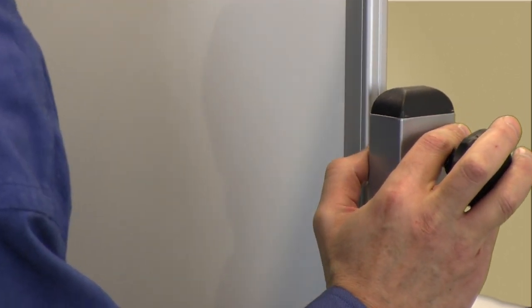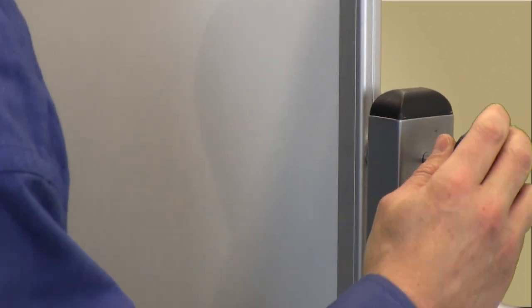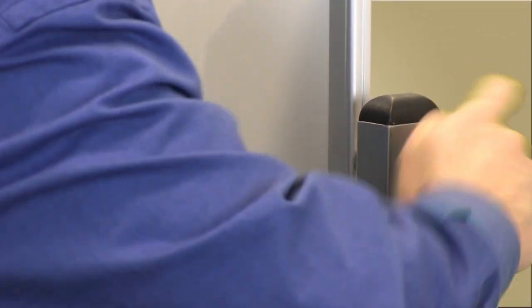Once you've lined up the components, turn the knob clockwise, screwing it through the assembly into the side of the whiteboard.